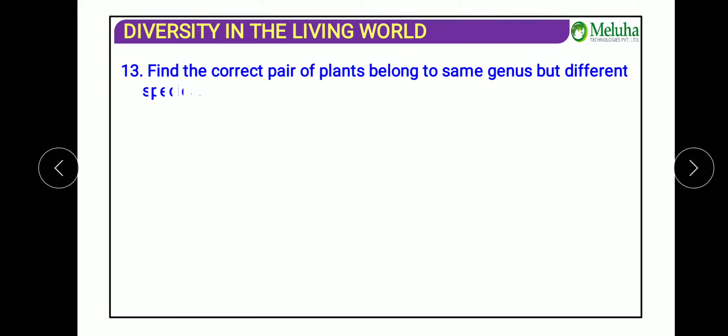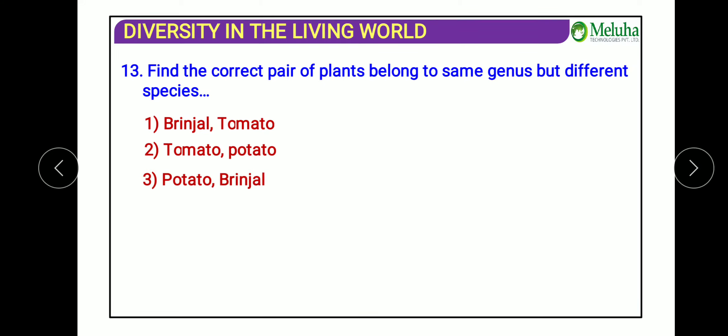The next question: find the correct pair of plants belonging to the same genus but different species. The answer is potato and brinjal. Both belong to the same genus Solanum — Solanum tuberosum is potato and Solanum nigrum refers to brinjal — making them different species within the same genus.